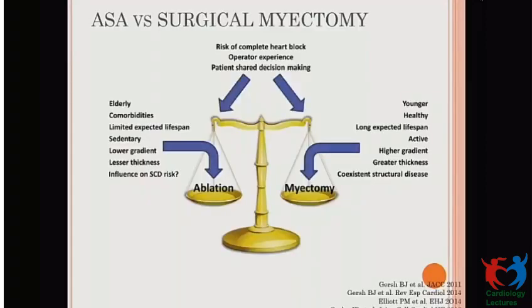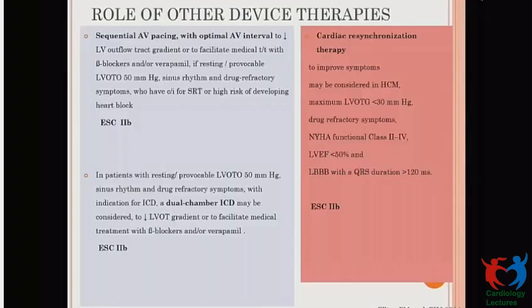For septal reduction therapy: in NYHA Class 3–4 symptomatic patients on adequate drug therapy, if the LVOT gradient is more than 50 mmHg or there is unexplained syncope, either surgical myectomy or alcohol septal ablation (ASA) can be considered. Young patients with longer lifespan, active lifestyle, higher gradient, greater thickness, and coexisting mitral valve disease favor surgical myectomy. ASA is equivalent and preferred in elderly comorbid patients. Dual-chamber pacing and cardiac resynchronization in low EF with LBBB pattern is only a Class 2b indication.